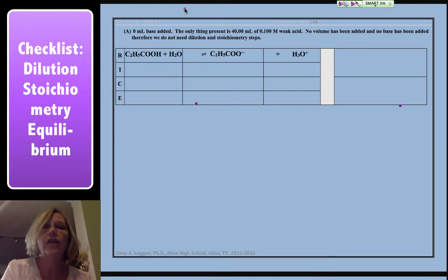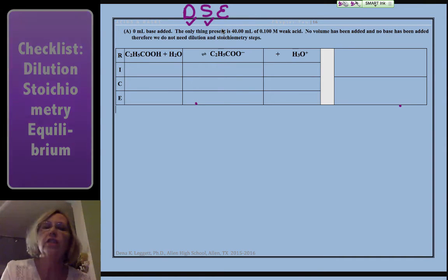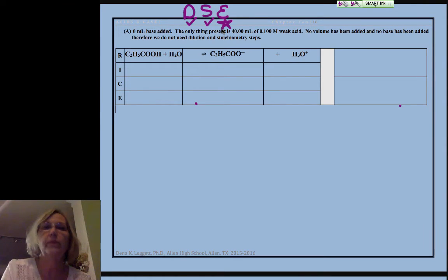Remember our acronym from before: DOC saves everyone. The first thing you want to do is see if you have a dilution, and we do not because we've not added base yet. We do not have a stoichiometry, so we get to jump right into our equilibrium.